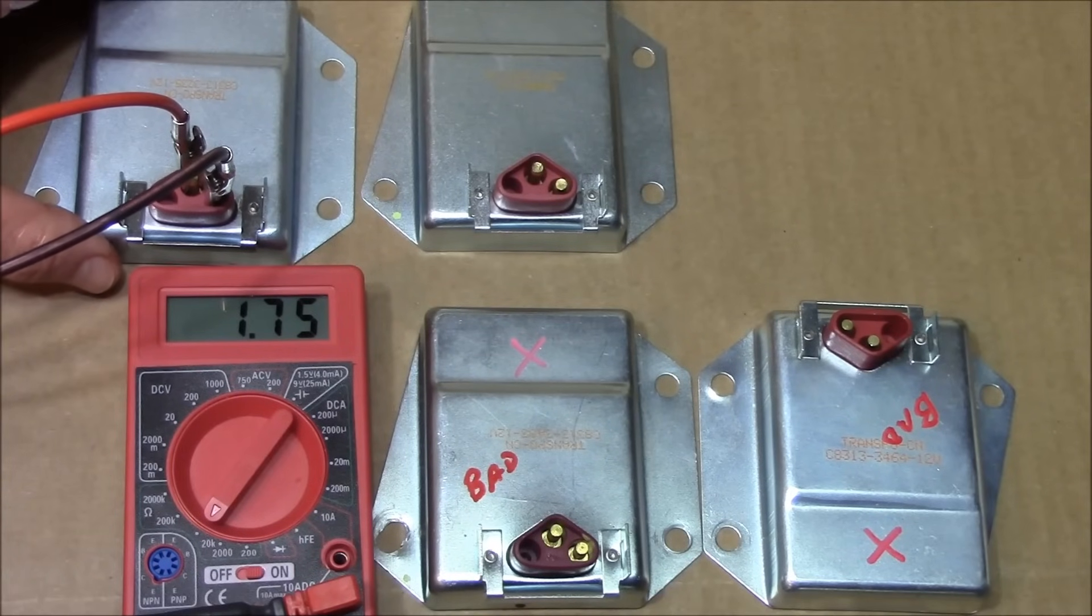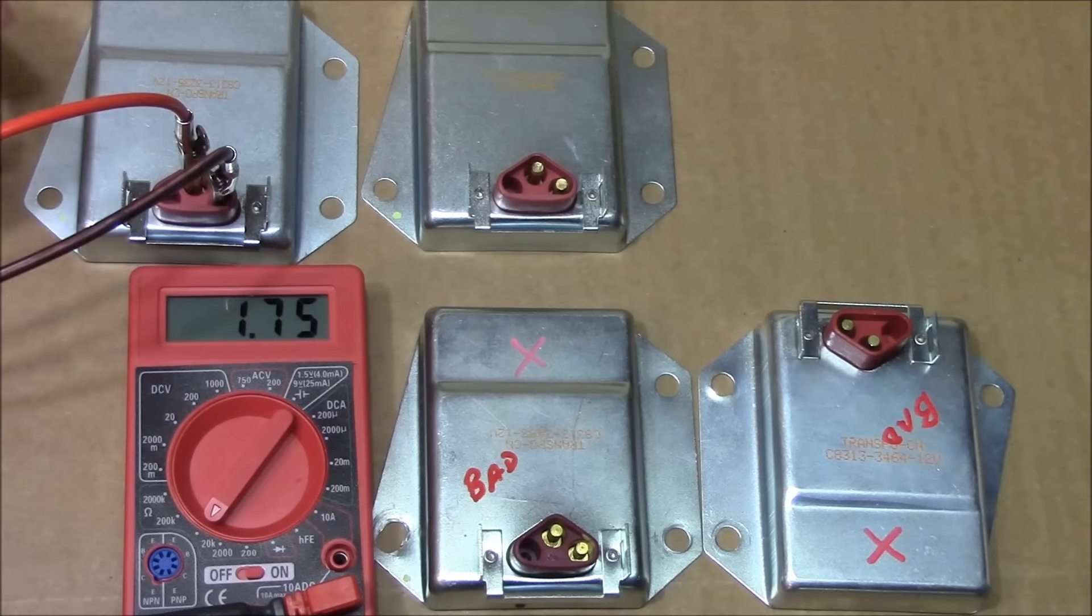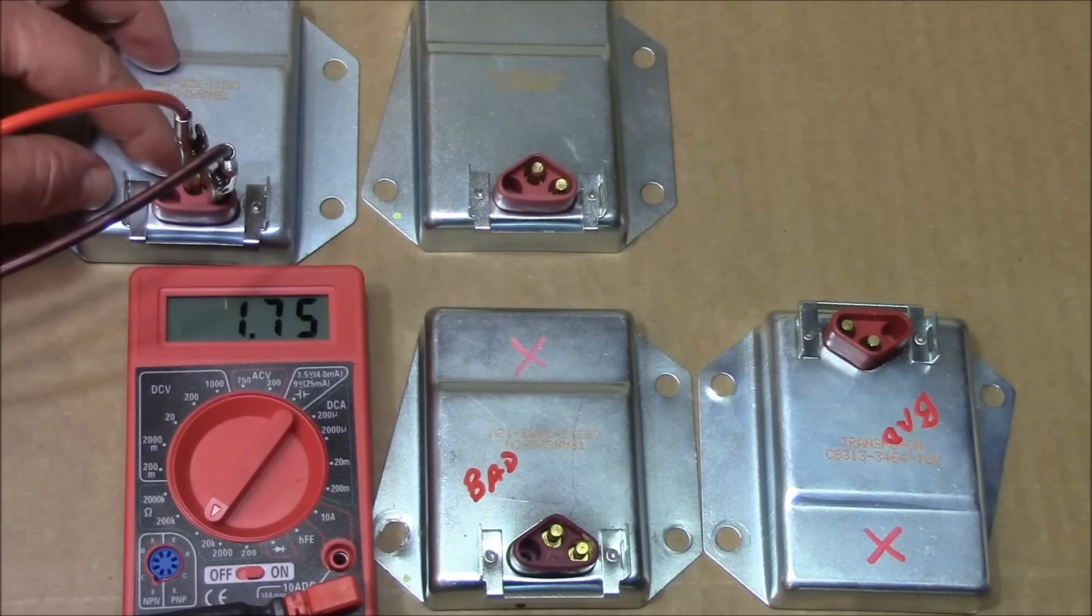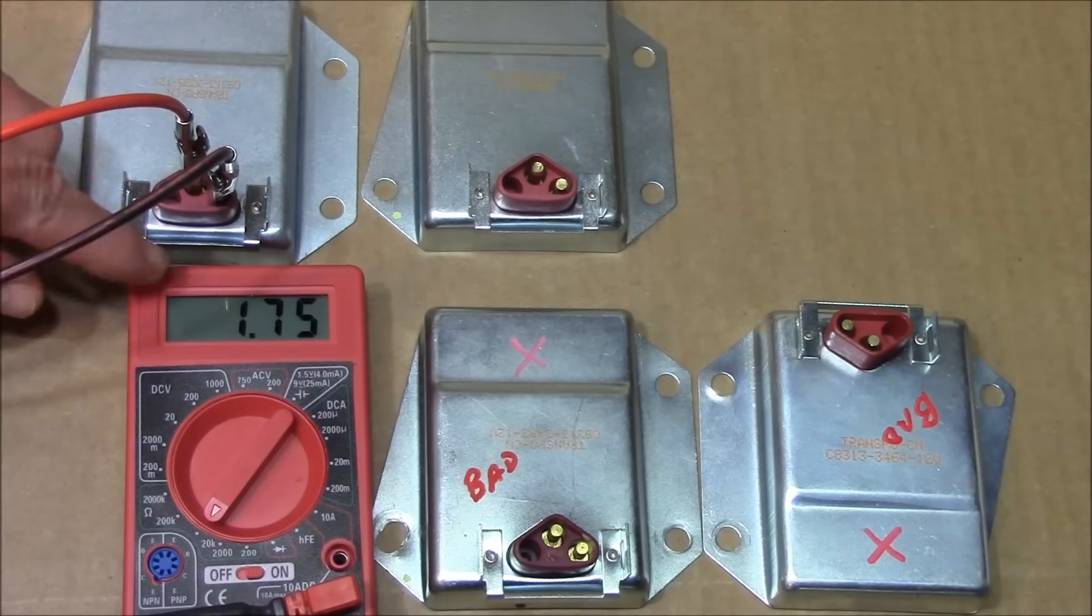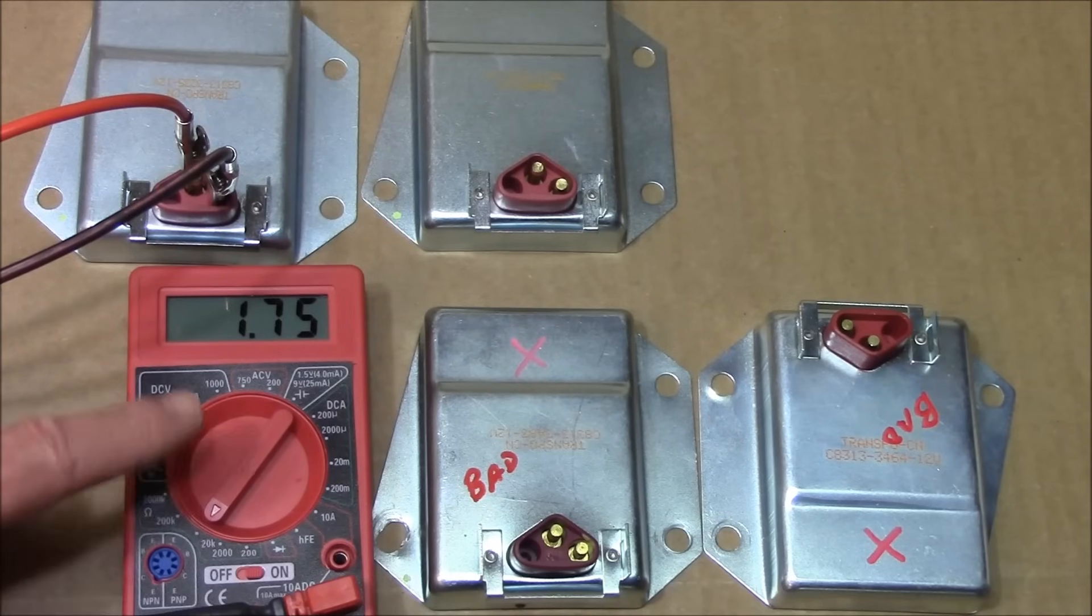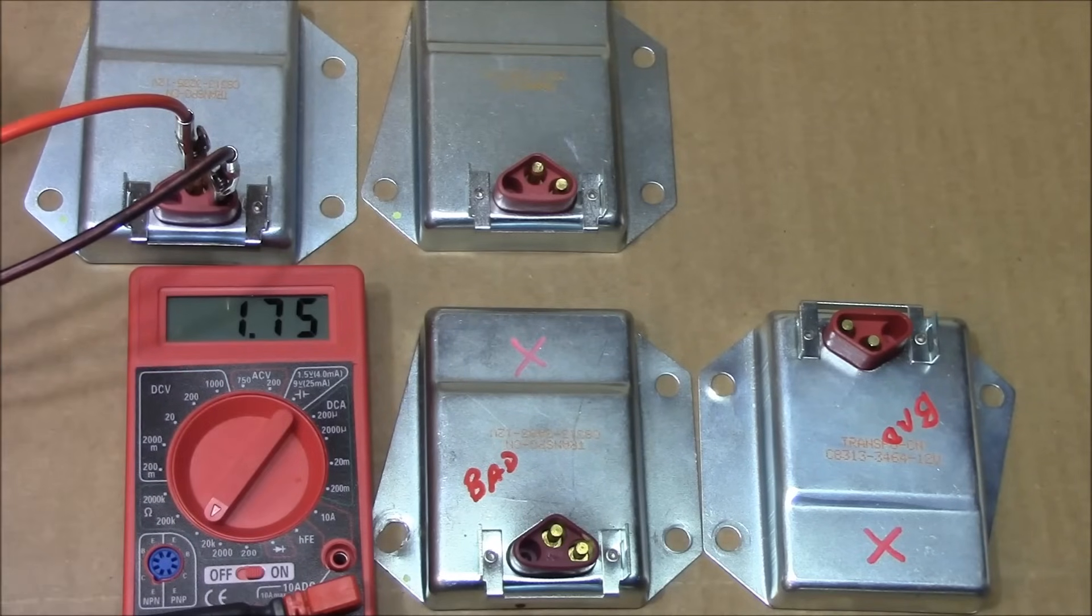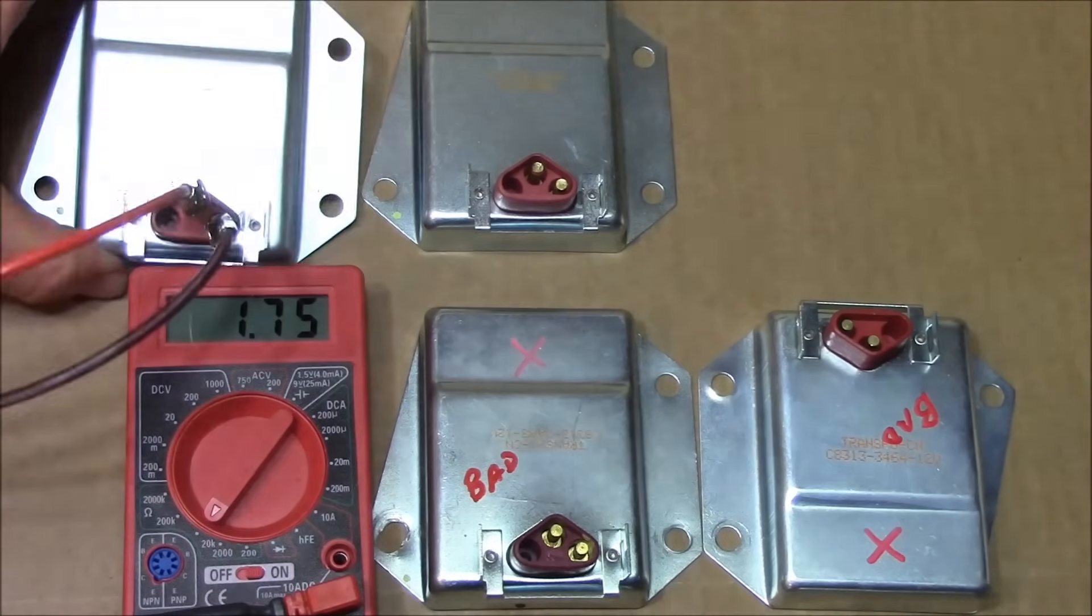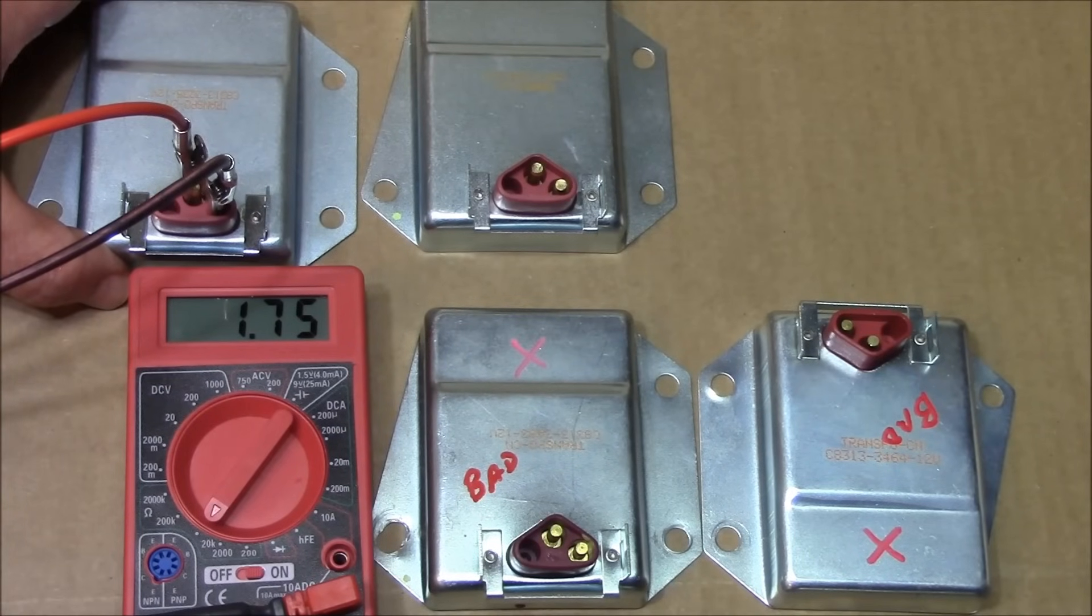I have this hooked up right now with the red going to the ignition terminal and the black going to the ground and field terminal. I have it set at 20k ohm on my digital multimeter and you see it's reading 1.75. This is a brand new voltage regulator preset at 1.75 on the 20k ohm level setting.